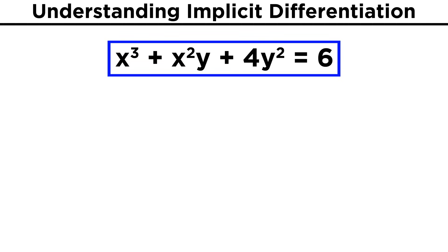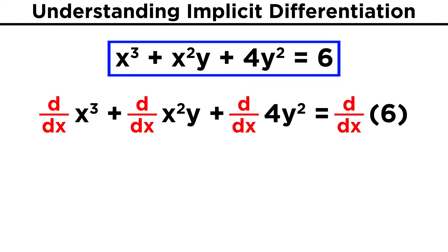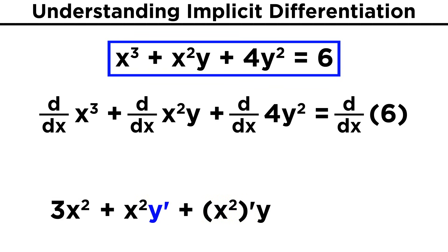Here's a slightly trickier one. Again, we will take the derivative of everything with respect to x, and we can treat each term in the sum separately. X cubed is easy — since there's no y, we just get three x squared, as we would expect. Now for the second term, we have to use the product rule, since it's a product. So let's write x squared times the derivative of y, plus the derivative of x squared times y. Now we evaluate these derivatives. The derivative of y will be y prime — remember, y is a function, and its derivative is some other function which is what we are looking for, so we just write y prime. The derivative of x squared is two x. So we have x squared y prime, plus two xy.